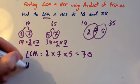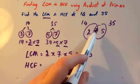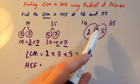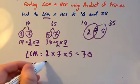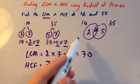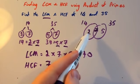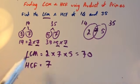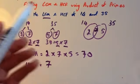For the highest common factor, you multiply the numbers in the middle together. This question has only got a 7 in the middle, so the highest common factor is 7. So: the lowest common multiple is found by multiplying all the numbers in the Venn diagram together — 2 times 7 times 5 — and the highest common factor is found by multiplying the ones in the middle together, which is 7.